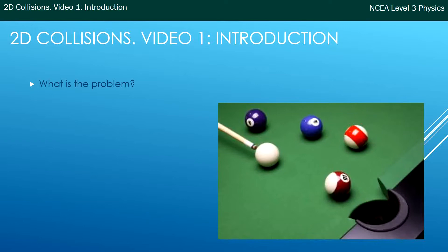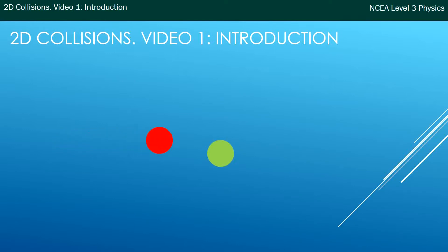We're looking at collisions in two dimensions, and although we did collisions last year in Level 1, what's the problem this year? Why do we need to do them again? Here's a quick animation. A red ball collides with a green ball and from the collision they split off in different directions.